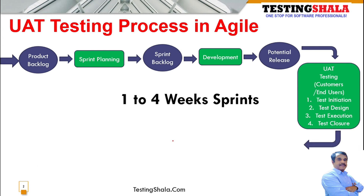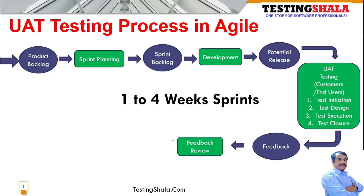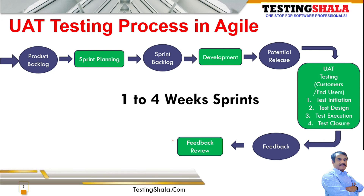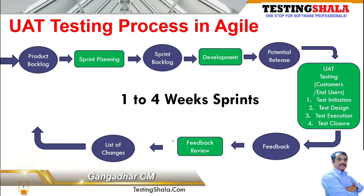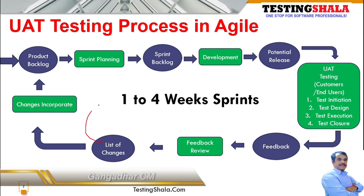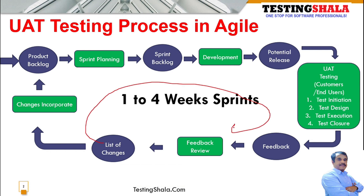Once the UAT testing is done by the customer or end user, feedback will be provided by the UAT testing team — in this case customers or end users. That feedback will be reviewed with various stakeholders on the importance of the feedback. If they feel the feedback is very relevant and requires a fix, those changes will be incorporated and put back into the product backlog, completing the overall cycle of an agile project and how the UAT testing phase gets integrated into it.